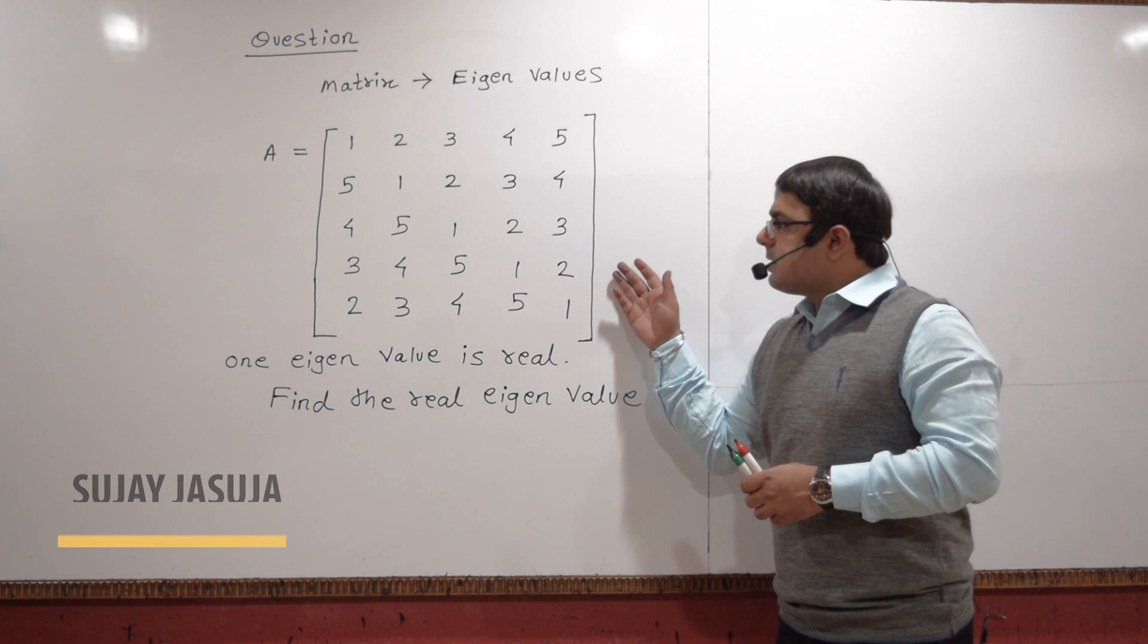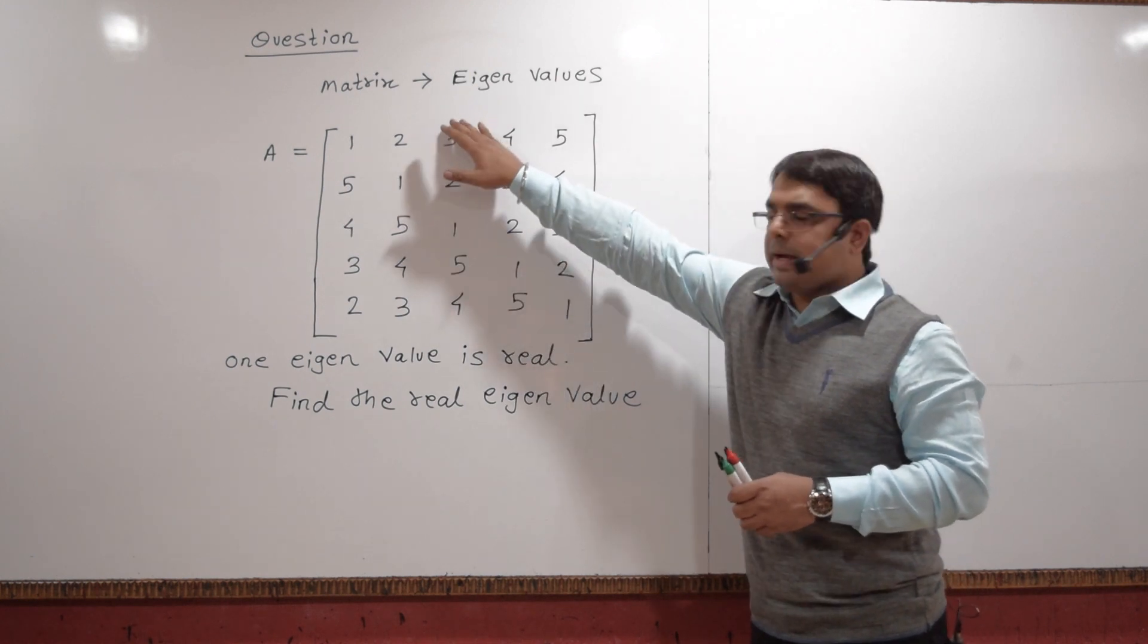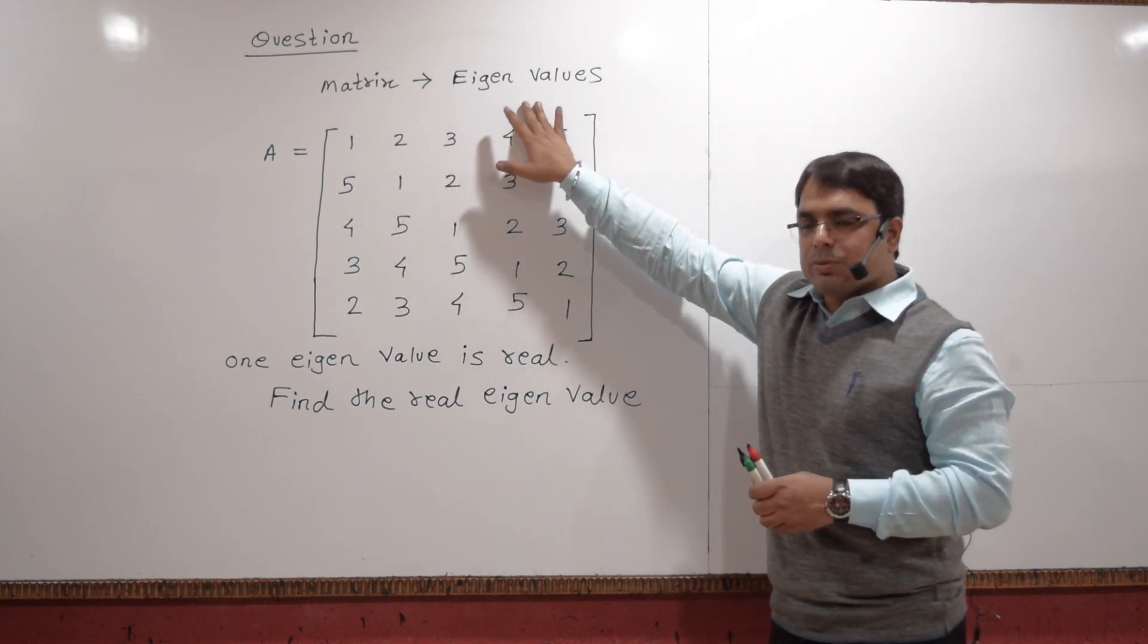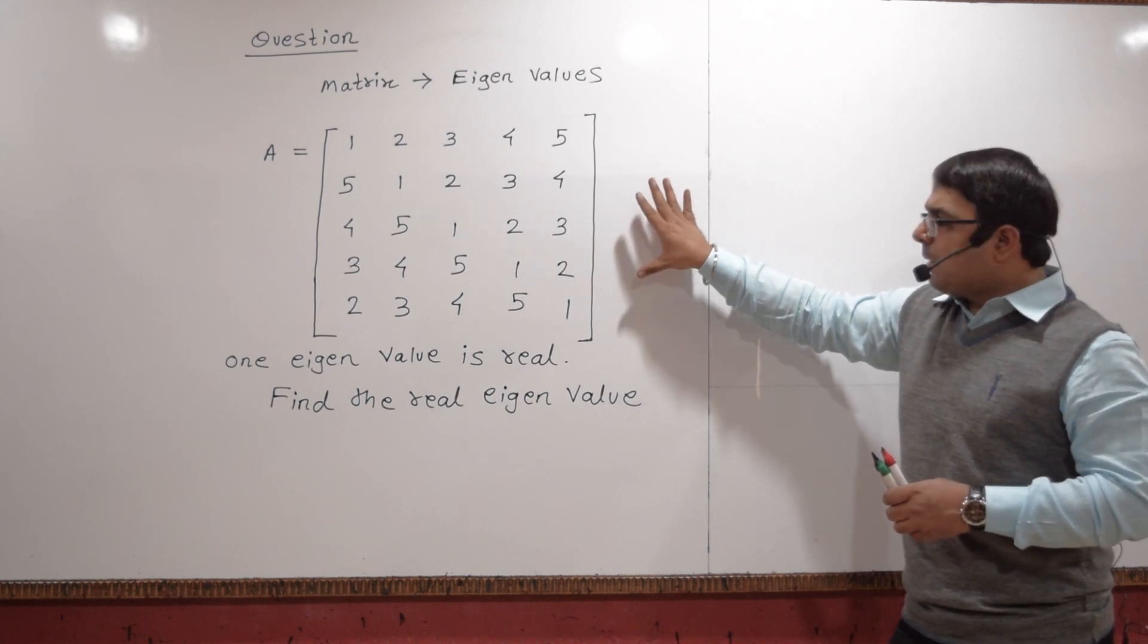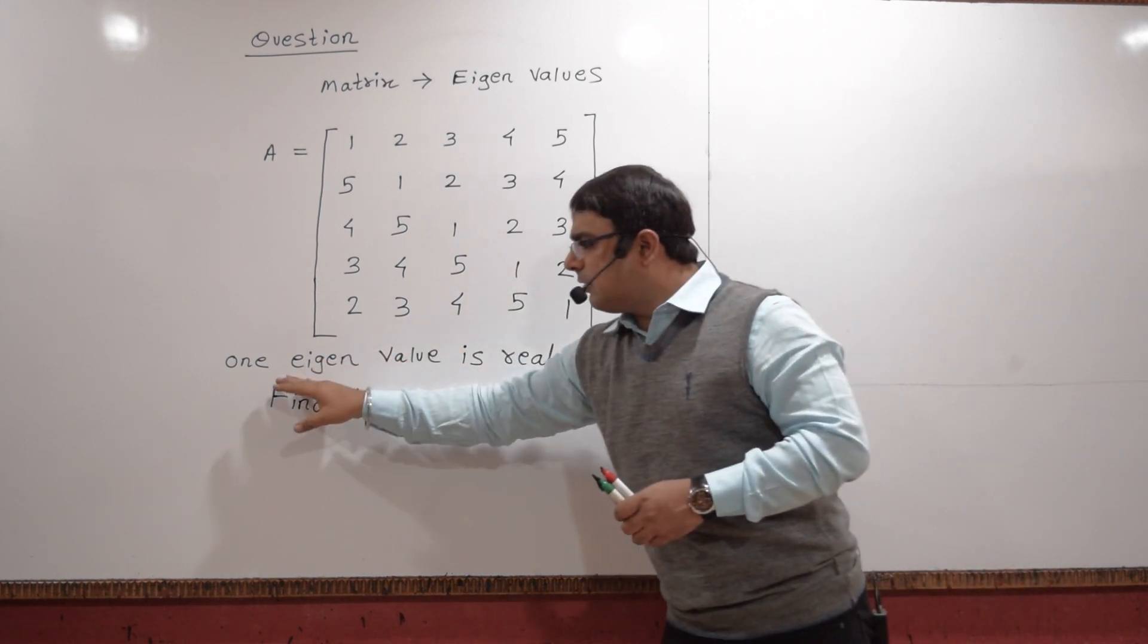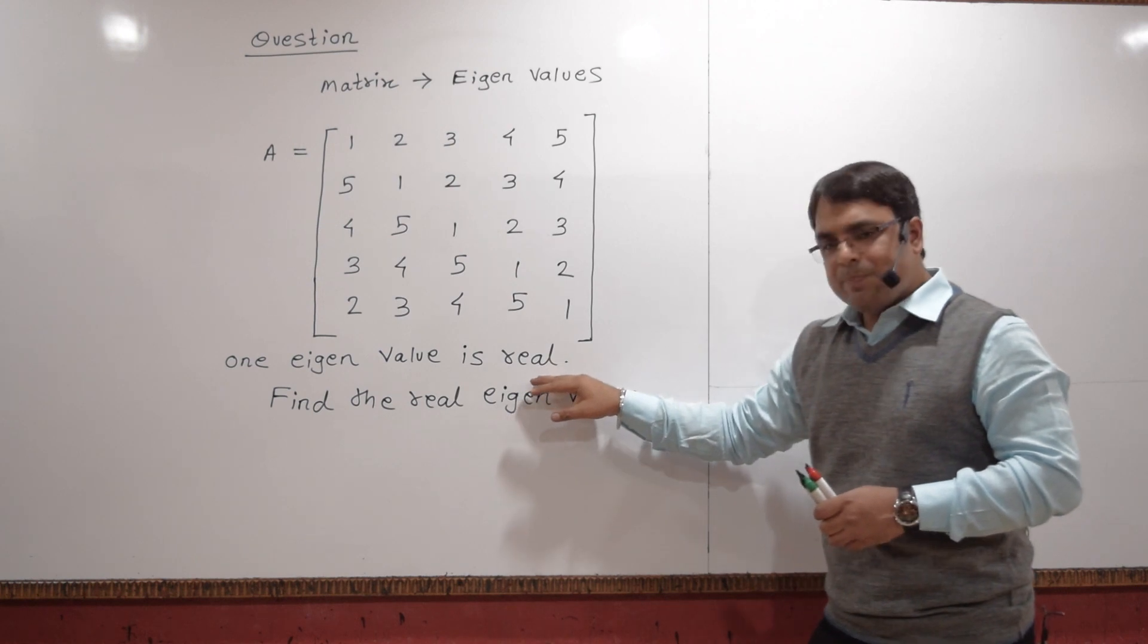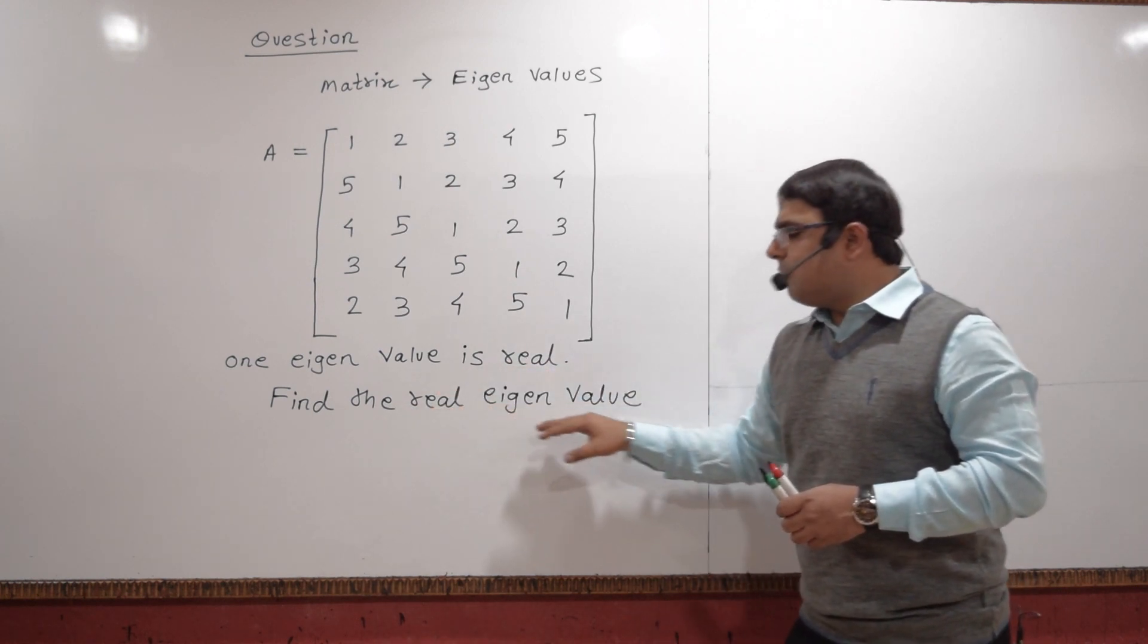Hello friends, this is a question from GATE 2017 EC branch set 1. This is a question from matrix and the topic is eigenvalues. A matrix is given, and you're told that one eigenvalue is a real number, so you have to find that real eigenvalue.